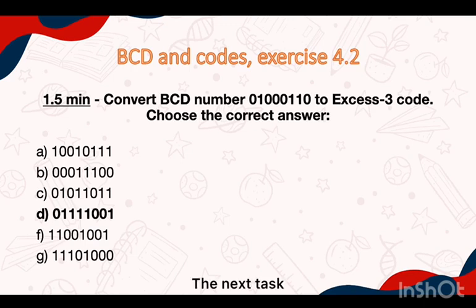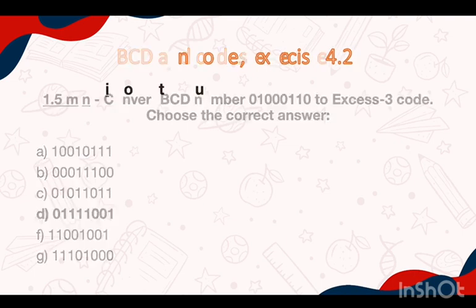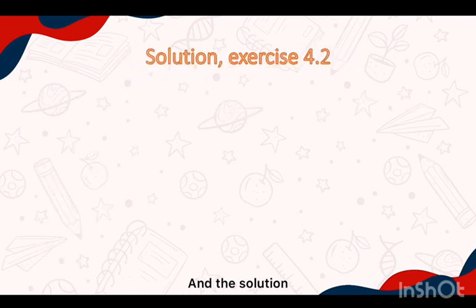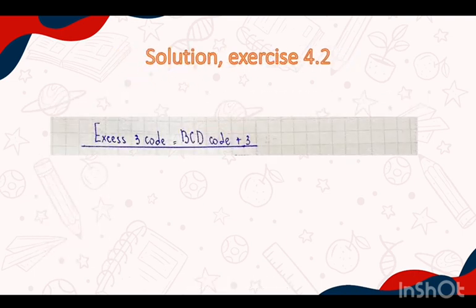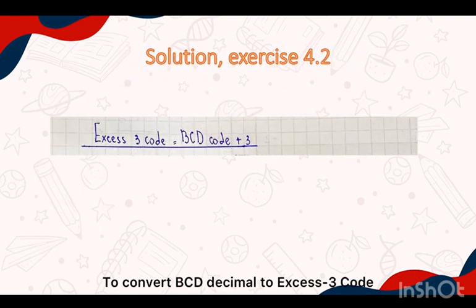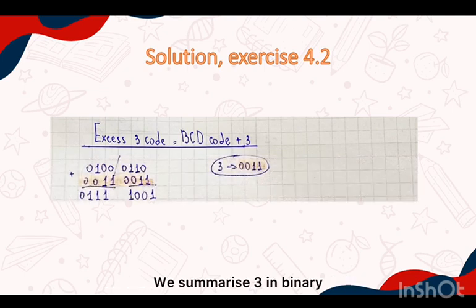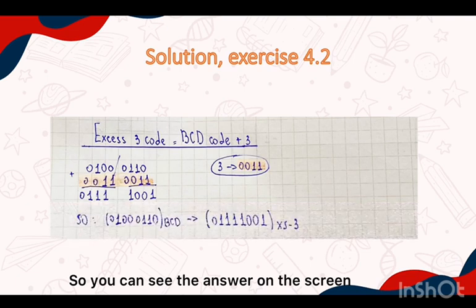The next task and the solution. To convert binary coded decimal to Excess-3 code, we add 3 in binary to each decimal digit. You can see the answer on the screen.